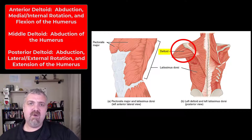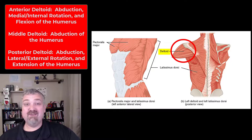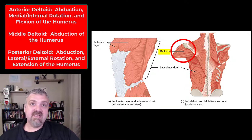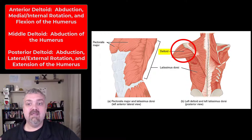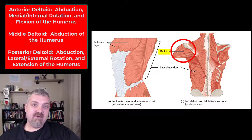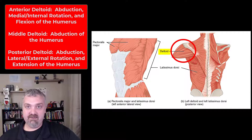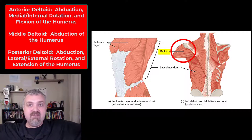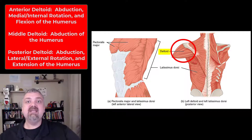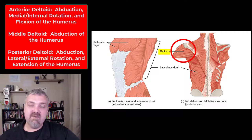I really want to talk about the deltoid. I've covered it in other videos, but in this video I want to talk about the different parts of it. Just like the trapezius really needs to be functionally treated like an upper, middle, and lower trapezius, the deltoid needs to be treated like an anterior deltoid, middle deltoid, and posterior deltoid. As a group, they do abduct the shoulder — it really is only one muscle — but functionally, the different parts have different jobs.